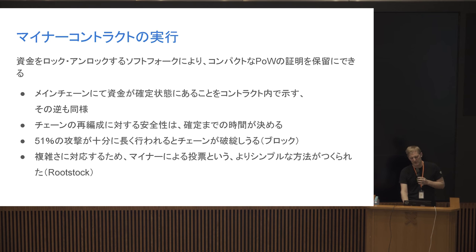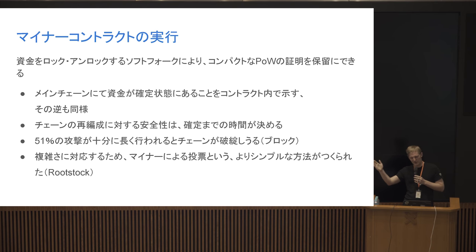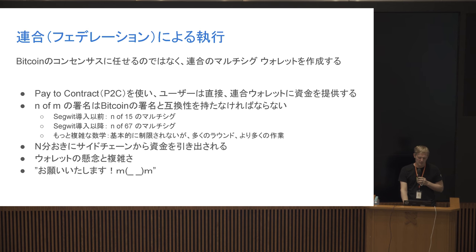This proof of proof of work is fairly complicated, so simpler alternatives have been created. Rootstock uses a very simple miner signaling opcode model where miners signal over a long period, saying 'I'm going to move this money to this address.' It relies on this social layer of people realizing that the money's not going where the sidechain said it was supposed to go, and then taking corrective actions — maybe a user-activated soft fork or something. On the other side of the coin, you can rely on federated enforcement — these watchmen, as we call them.